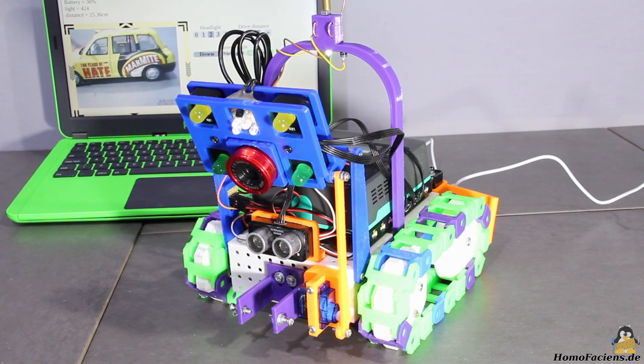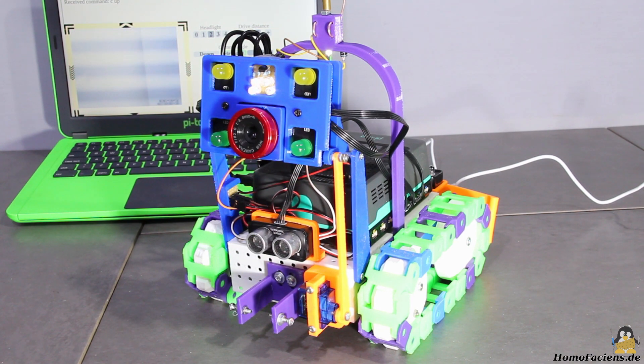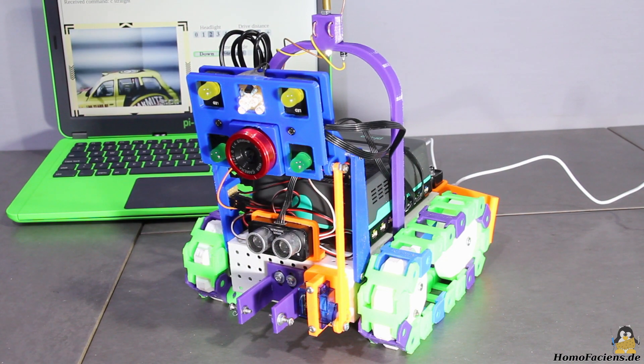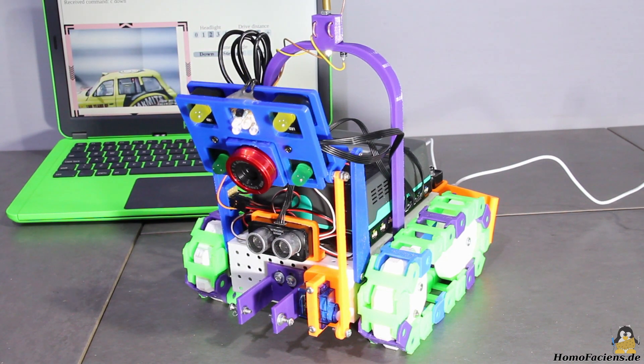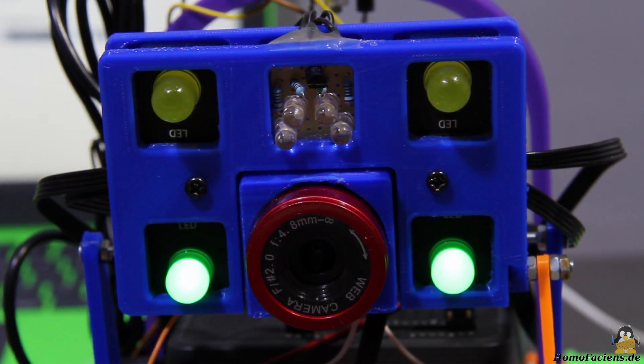The micro servo can point the camera up, straight, or down, and the LED modules illuminate the environment when driving at night.